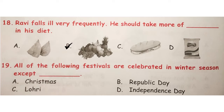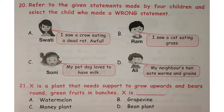Question number 19: all of the following festivals are celebrated in winter season except dash. Answer is option D because Independence Day is celebrated on 15th August in India, and July, August and September are the monsoon months.